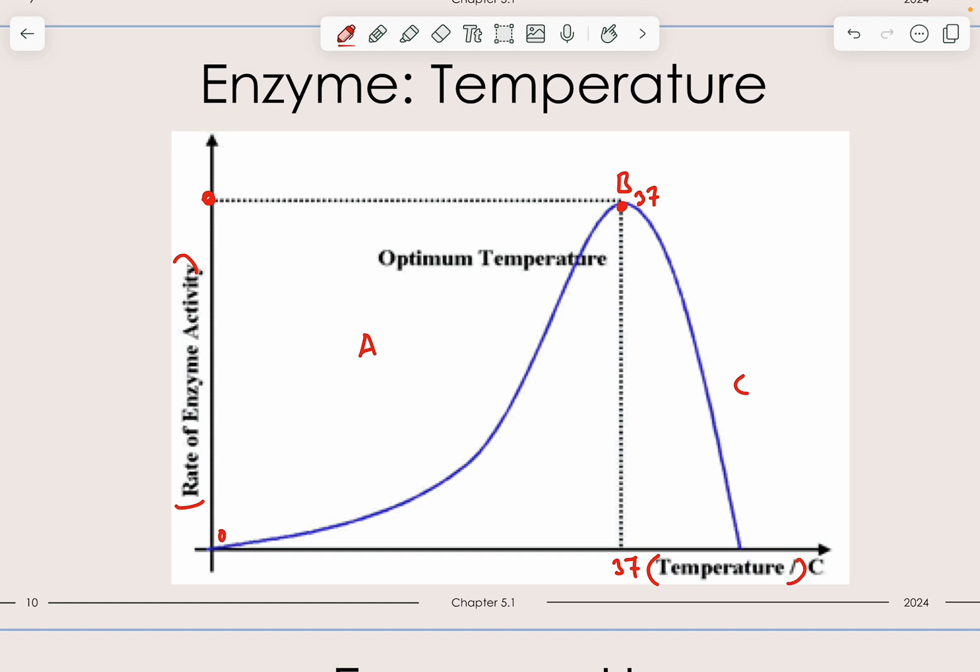Once you increase the temperature, for example here at 50 degrees, you can see that the rate of reaction drops. When the rate of reaction drops, it starts to denature at the same time. The moment that it denatures, the active site begins to change its shape on the enzyme, making the substrate that initially could bind to it perfectly or complementary no longer possible. Because the active site has been changed and already modified due to the presence of high heat.